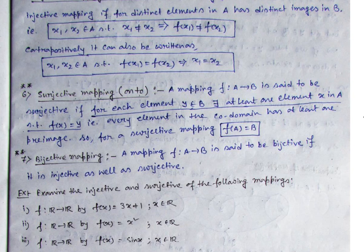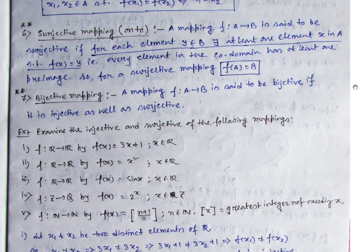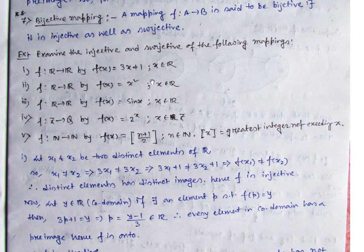That is the main difference — every surjective mapping is an into mapping when the sets become the same. Bijective mapping has a huge contribution in abstract algebra. So let us find out some problems — we have to check whether the following functions are injective and surjective or not. I am discussing one or two problems; try to solve the remaining ones by yourself.